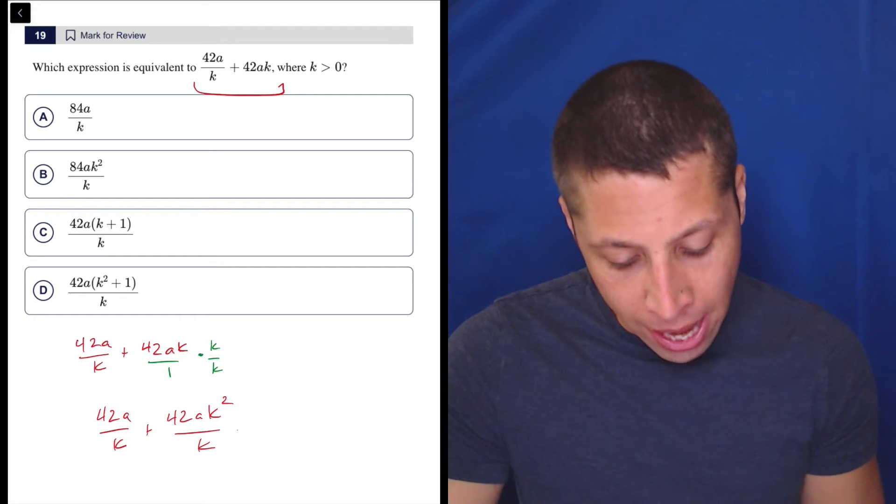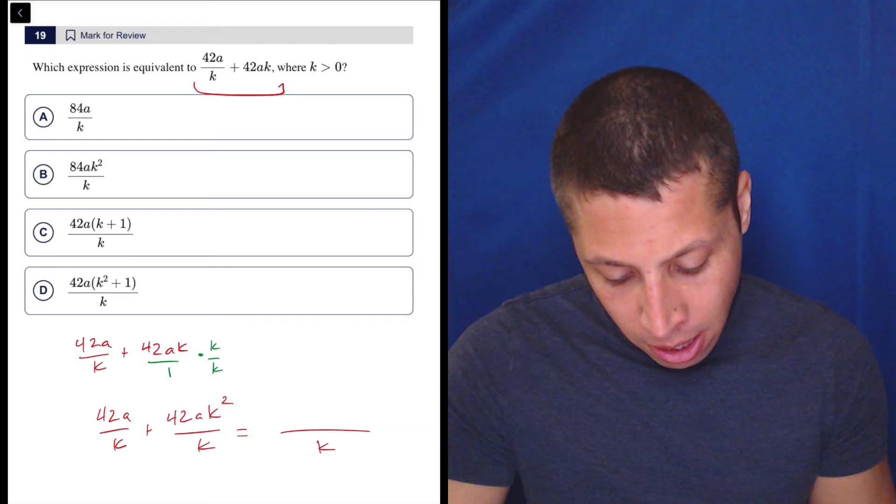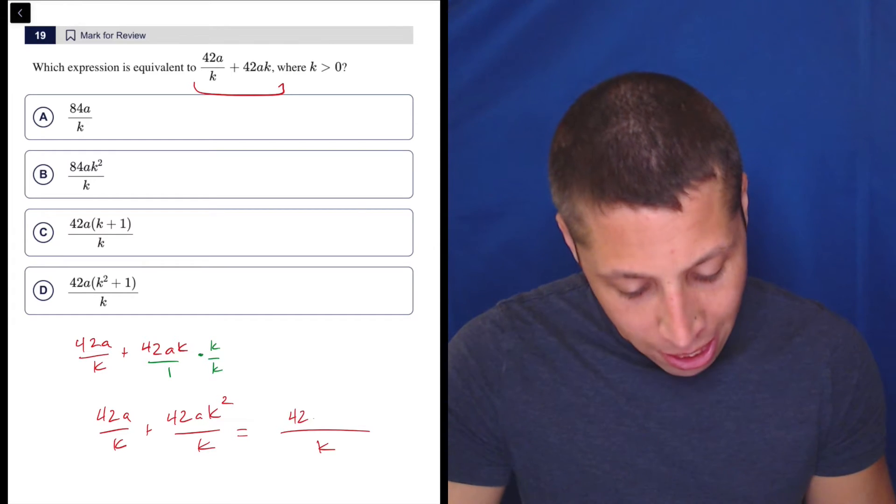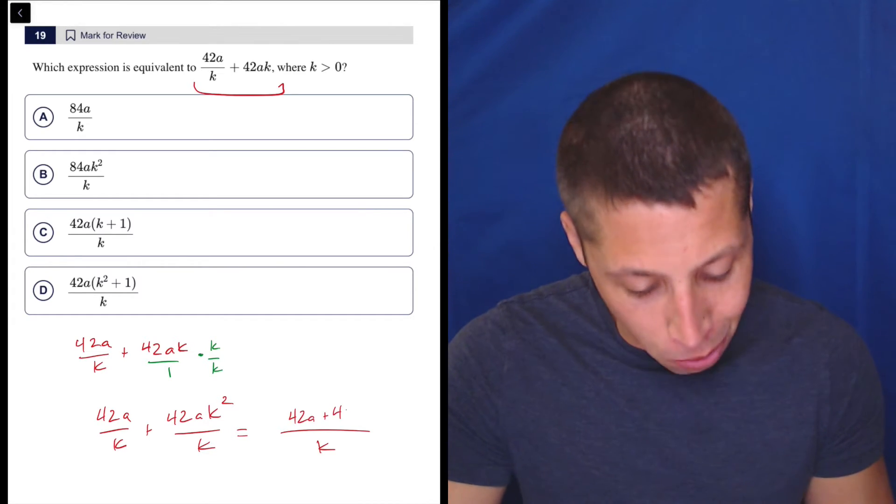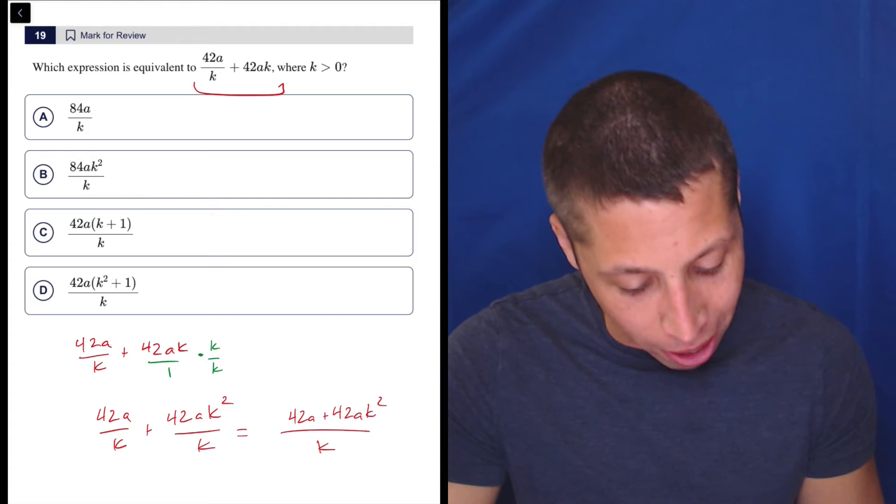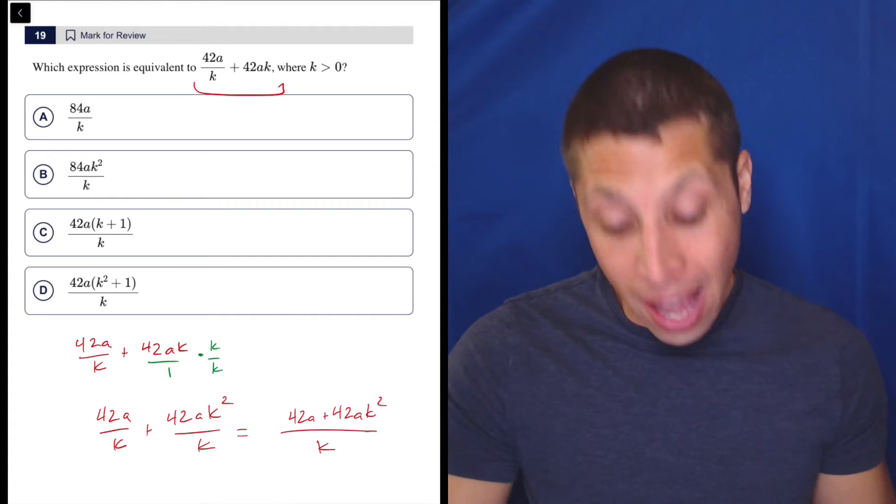So what that's going to let us do then is now have 42a over k plus 42ak squared over k. So now that we have k's, we can just keep going. And so the k is here. We have 42a plus 42ak squared.